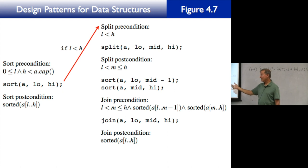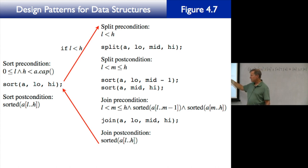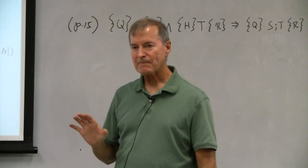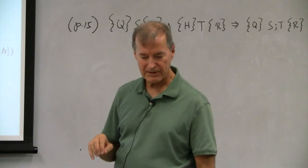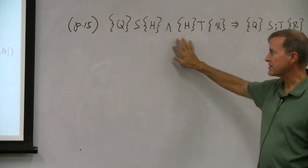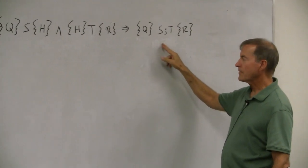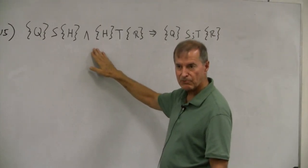So as long as these do their individual jobs, we've proved that sort is correct. All you have to do is make sure that each one does their individual job. This is software engineering — preconditions and postconditions and contracts. The main idea is based on P.15: when you have two statements that execute one after the other, the postcondition of one is the precondition of the next. If you maintain that, then everything is correct.